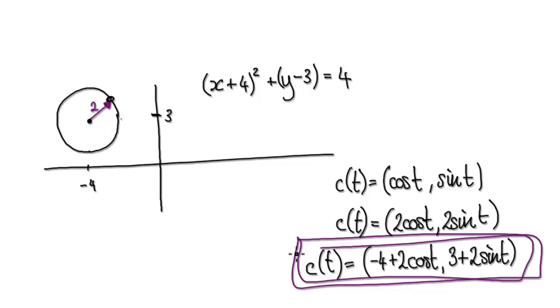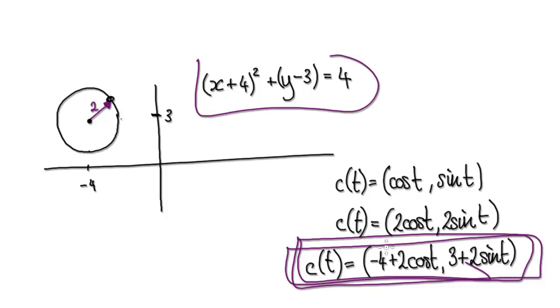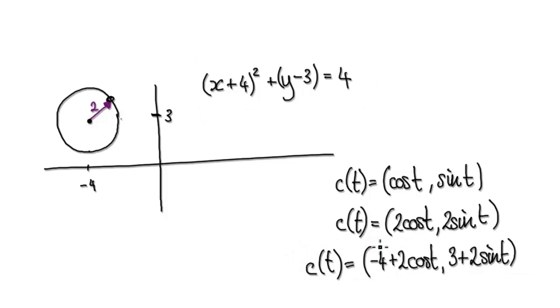I hope you can follow this. So if you want the parametric equations for this translated circle, it will be given by x equals 2 cos t minus 4 and y equals 2 sine t plus 3.